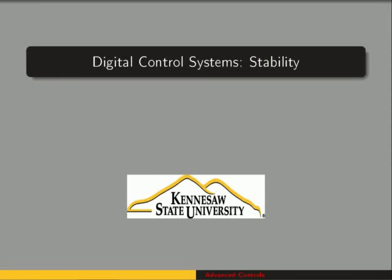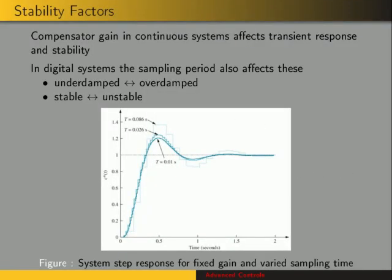In this video we're going to look at an important topic in control systems and stability. Whenever you study continuous systems you analyze stability based on the criterion of the location of the poles in the s-plane. And we're going to do the same thing for discrete systems, except in the z-plane.